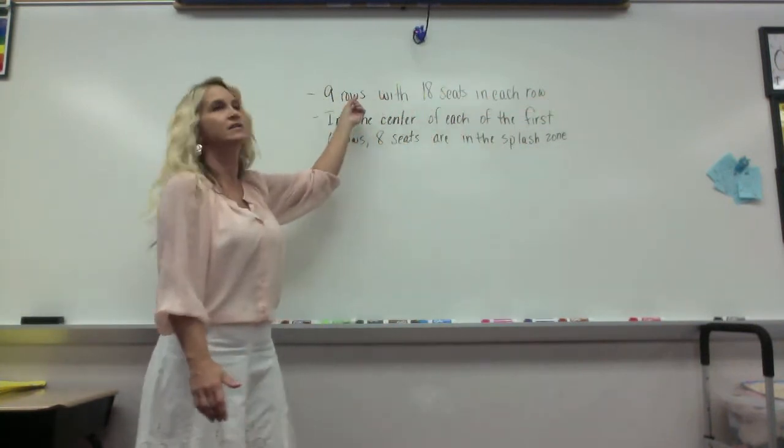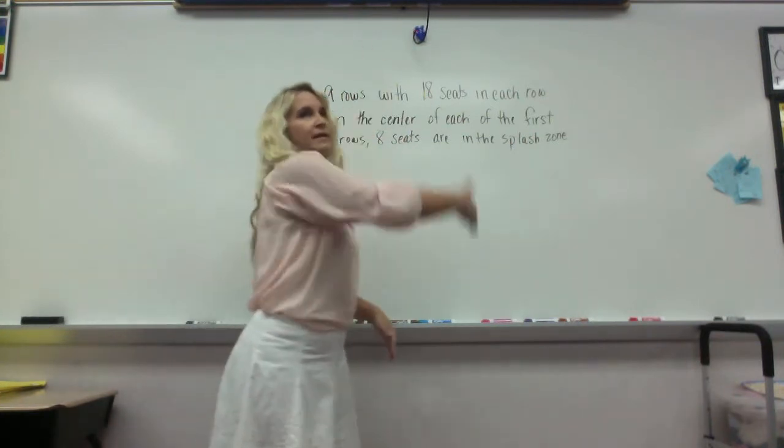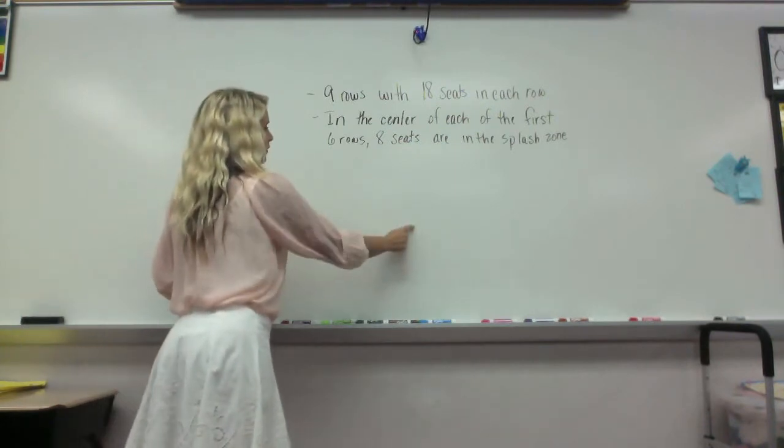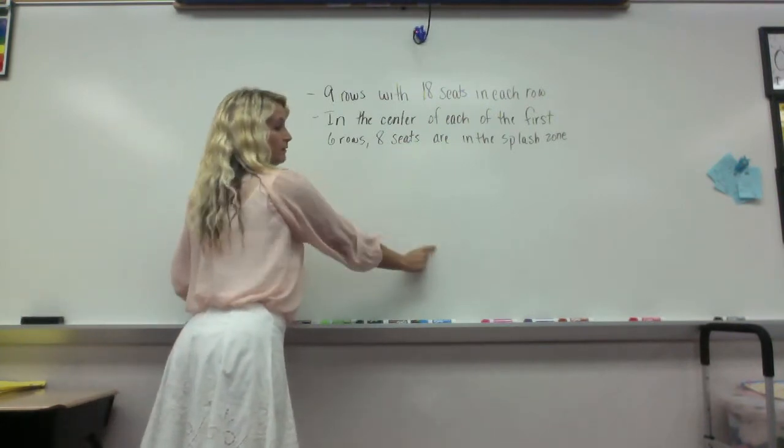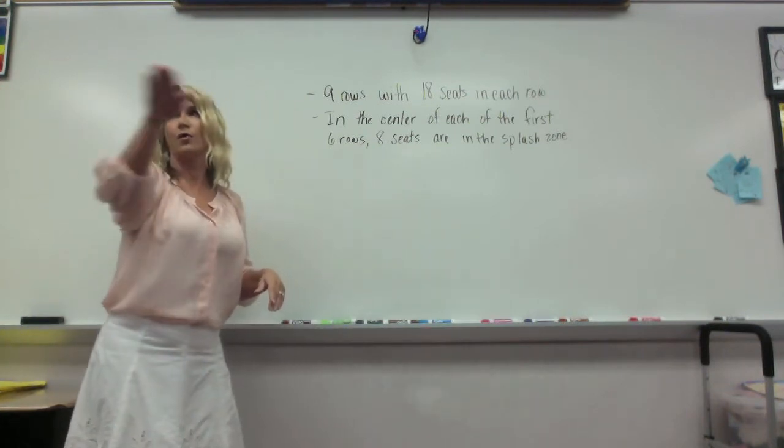So let's first of all decide what is a row. Do we just go across or do rows go up like this? Rows go across, that's a row. These are columns. So rows go this way. Rows go horizontal.